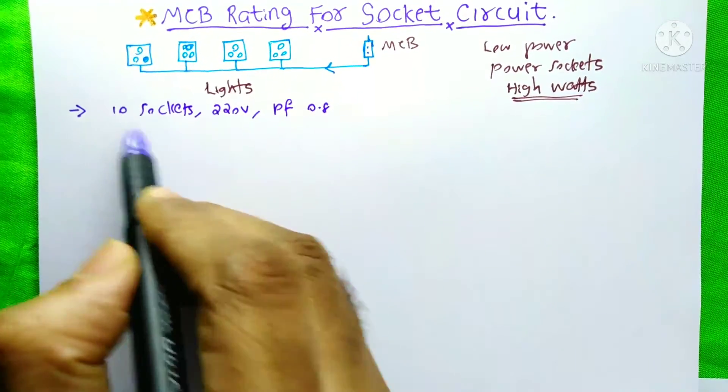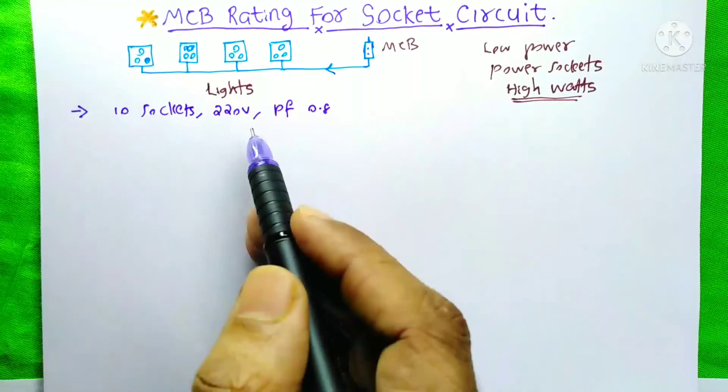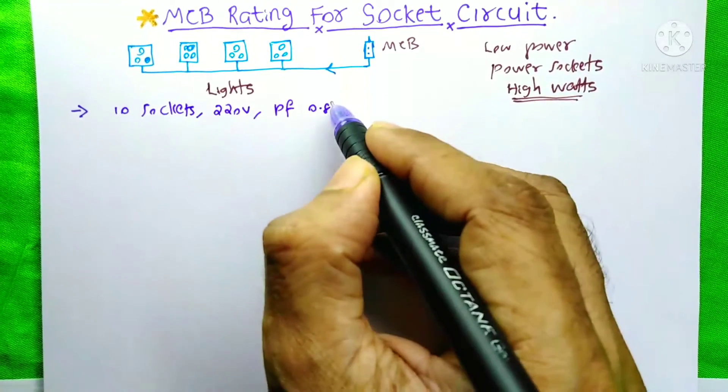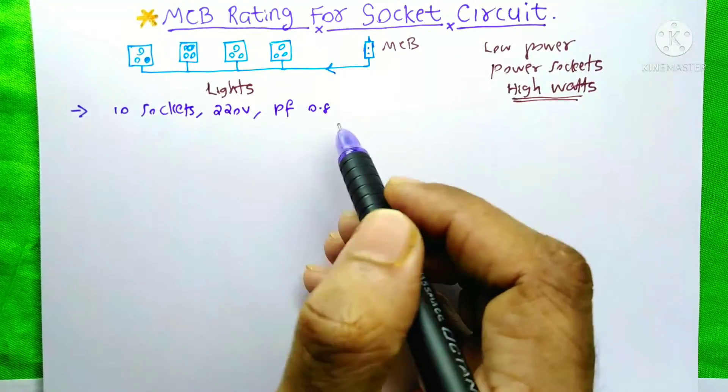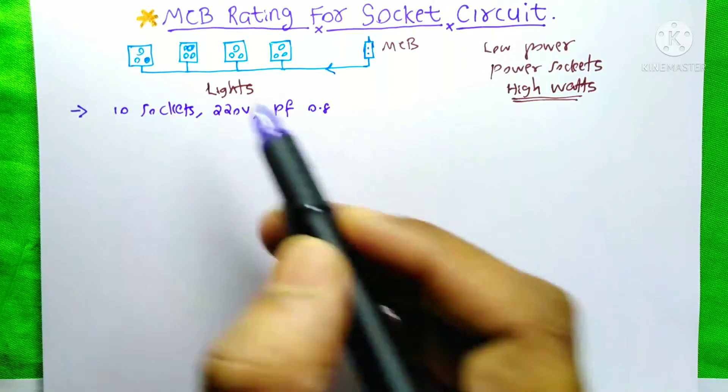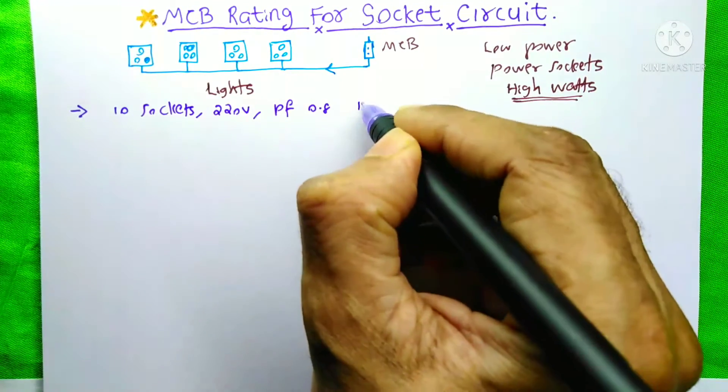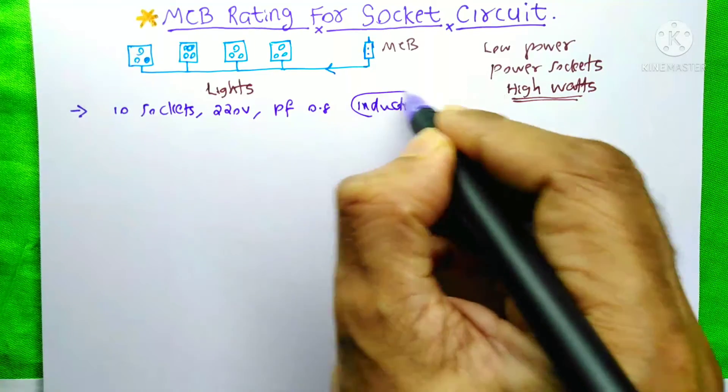Suppose I have 10 sockets and here the voltage is 220V and power factor is 0.8. You may be thinking why here power factor? Because consumers connect sometimes resistive loads, sometimes inductive loads. It is all their wish.